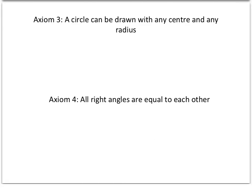The third axiom is that a circle can be drawn with any center and any radius. So if this was my center and that's the radius, I can then draw a circle from that center and radius. And of course I could have a different center over here and this radius, that length, and again I could draw another circle.